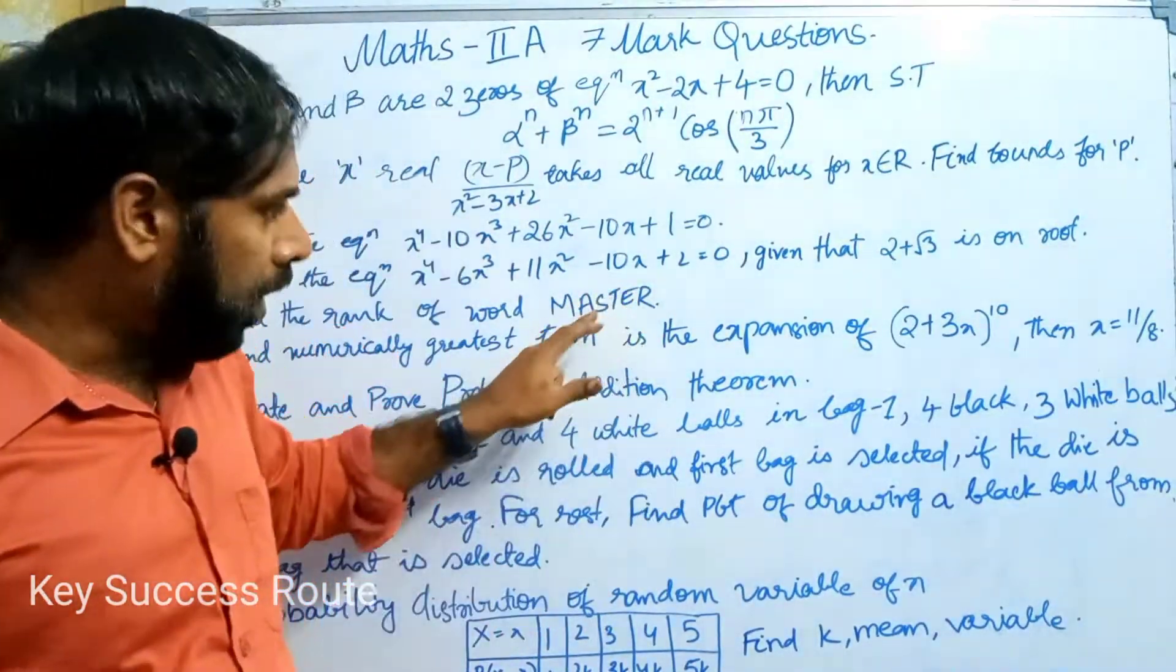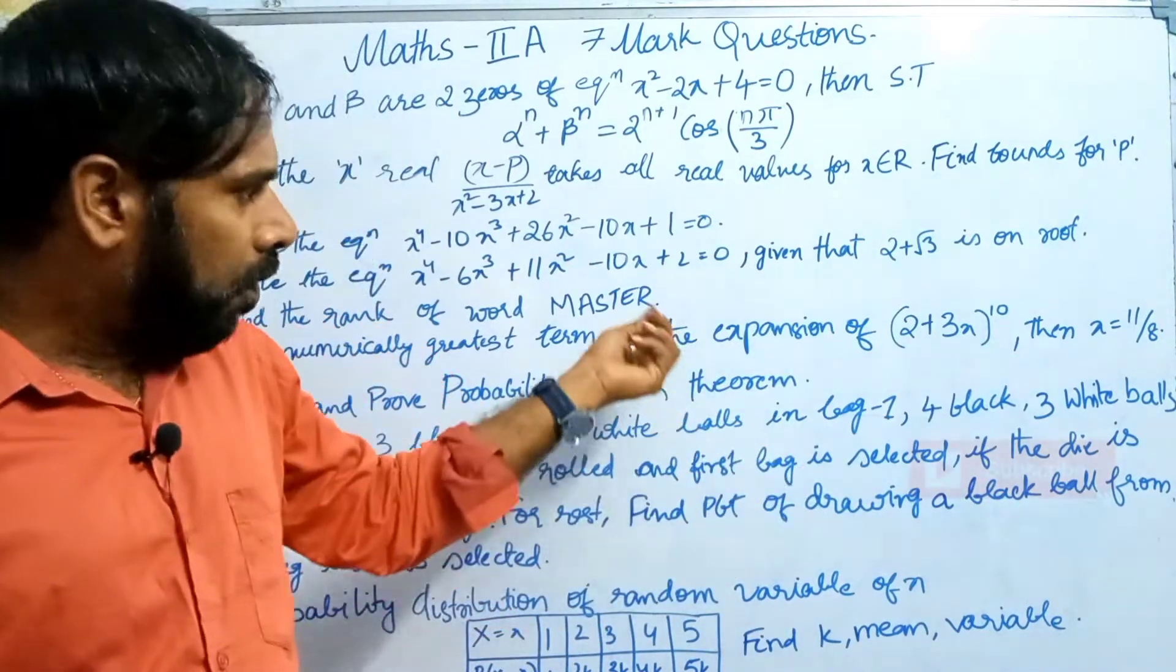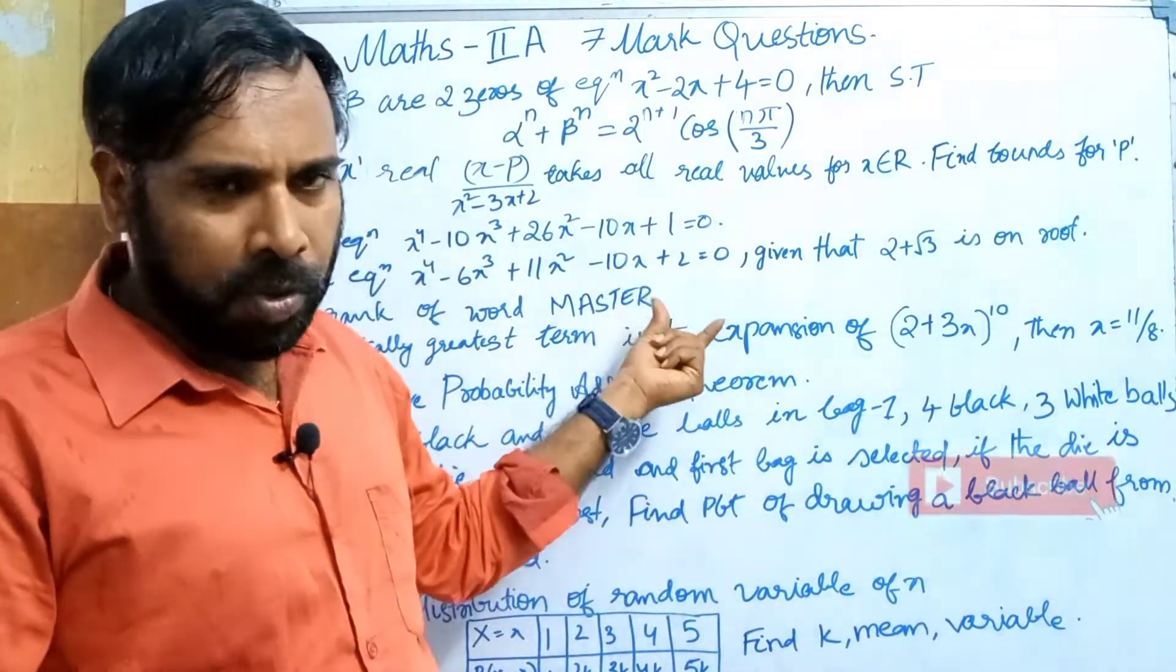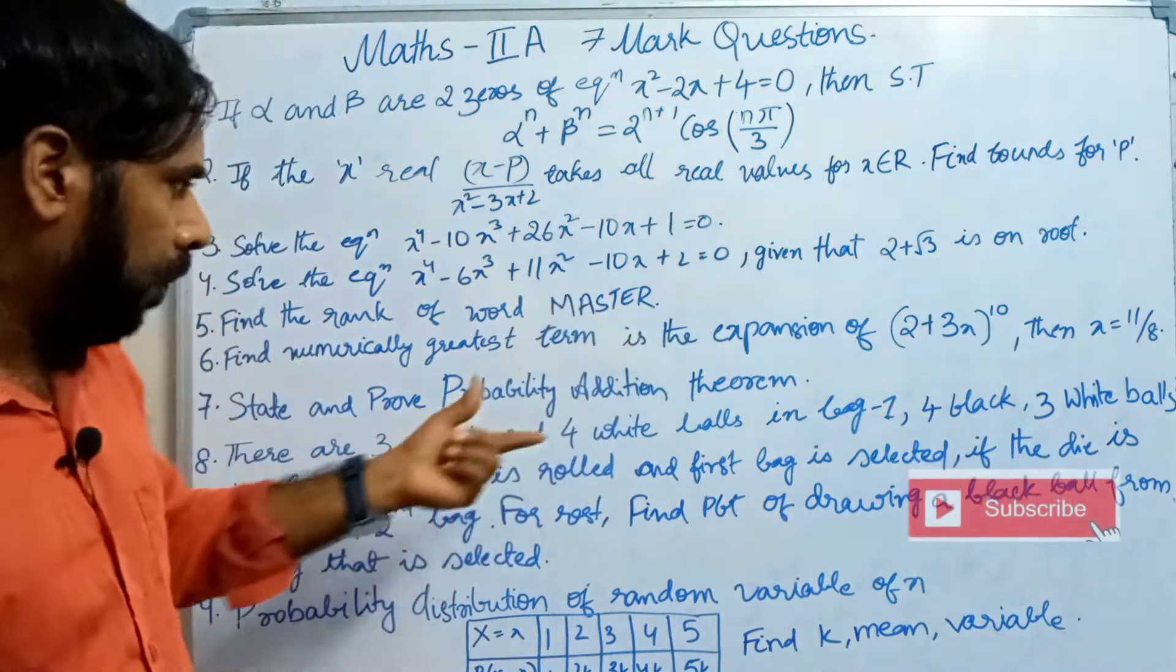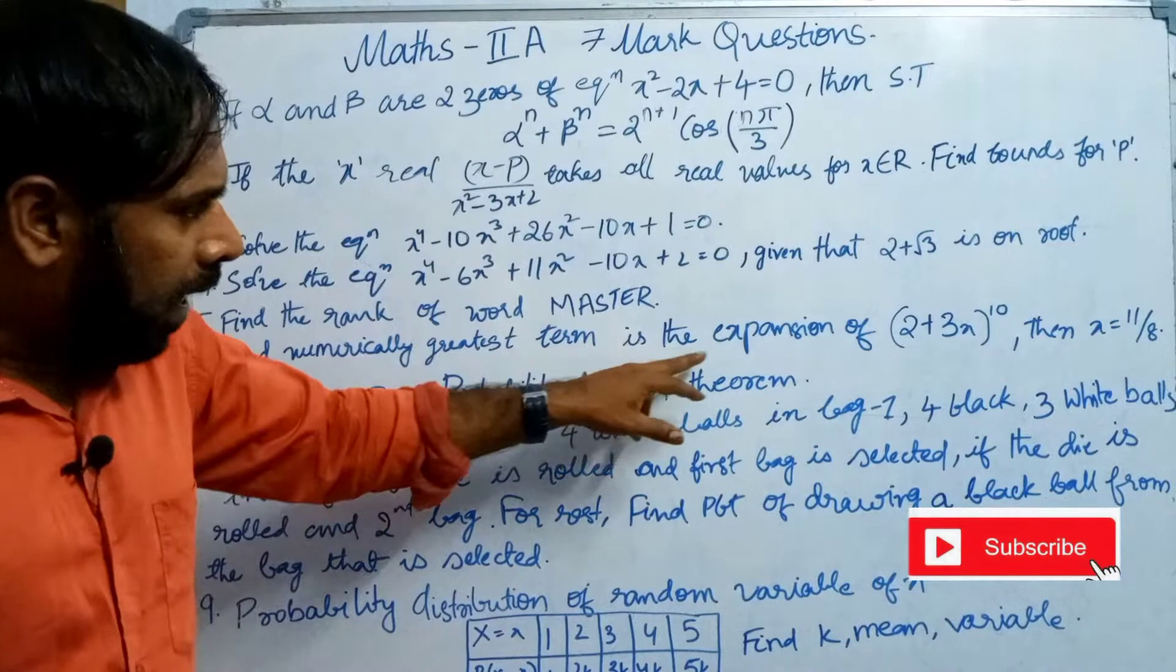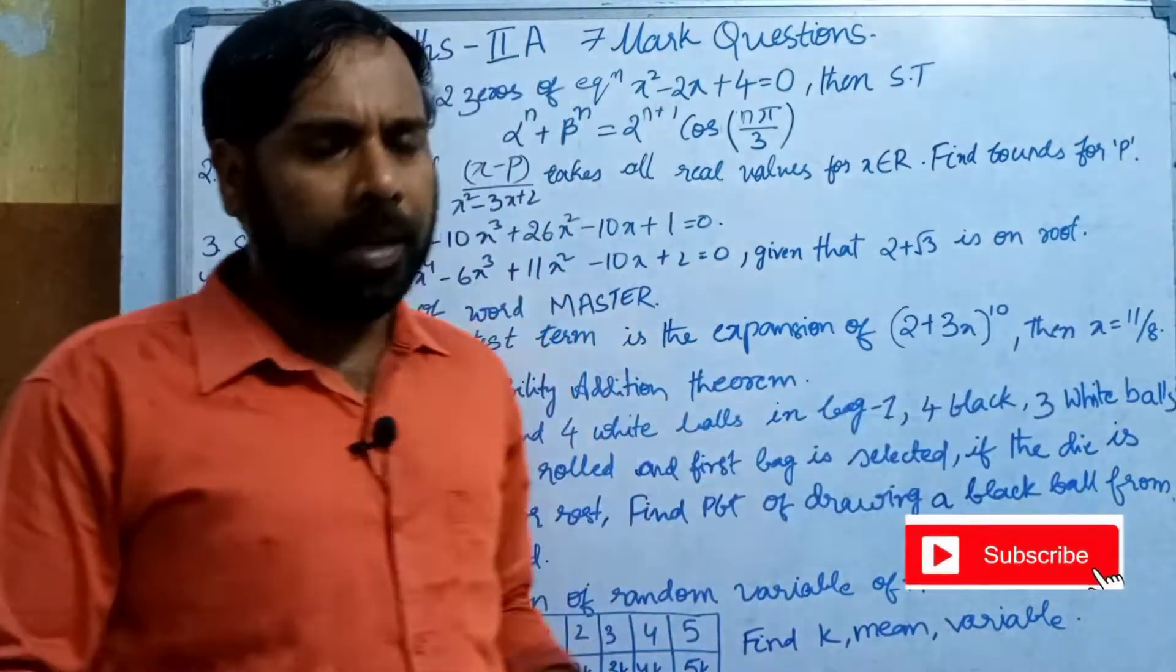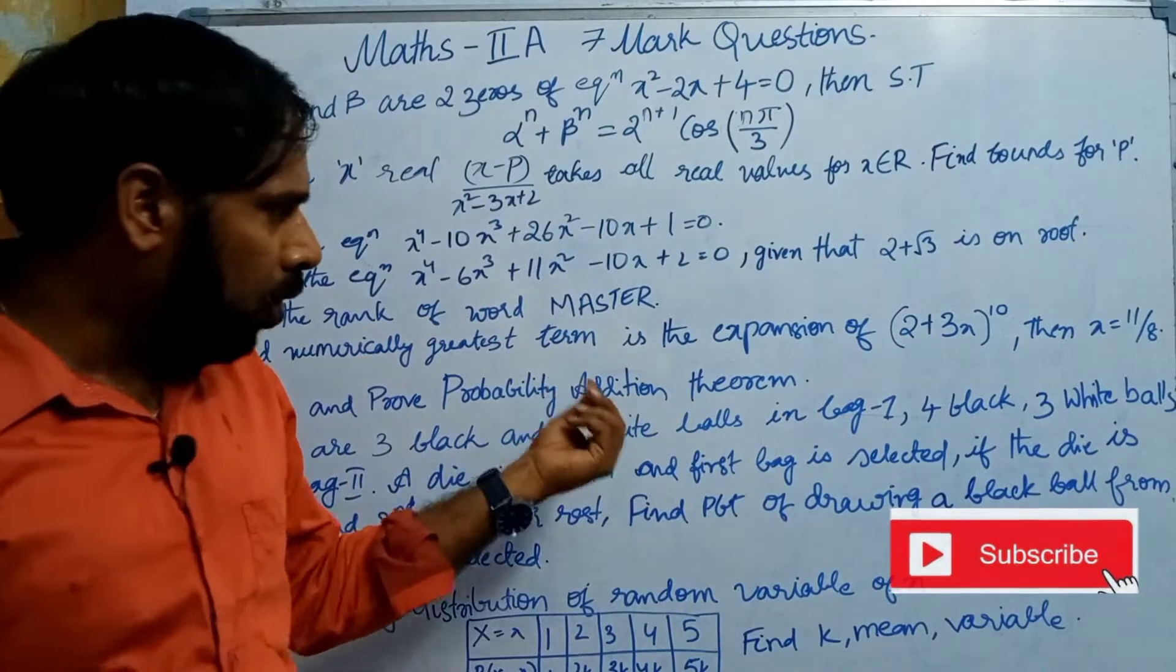If you ask this question, you can ask this question, but why are you asking this question? Finally, the greatest term in the expansion of 2 plus 3x whole power n, then x equals 11 by 8. So, this is the question.